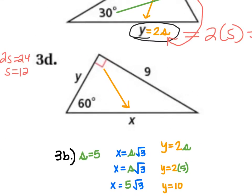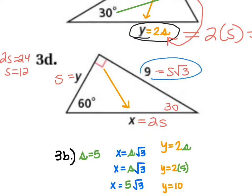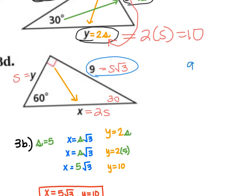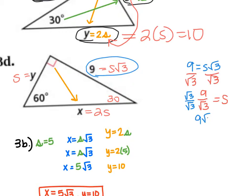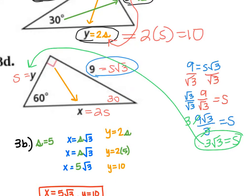The last example has S√3 given as 9 — again a trickier case. Set 9 = S√3, divide both sides by √3, rationalize: S = 9/√3 · (√3/√3) = 9√3/3 = 3√3. Then Y = 2 · 3√3 = 6√3, so X = 6√3.